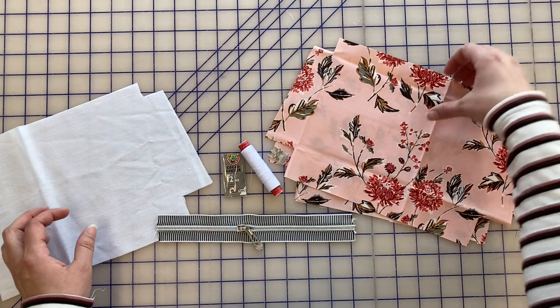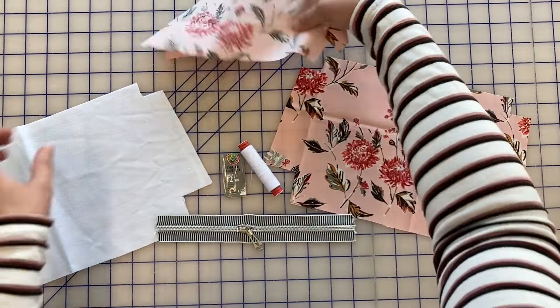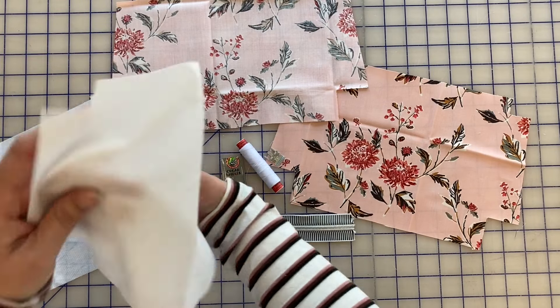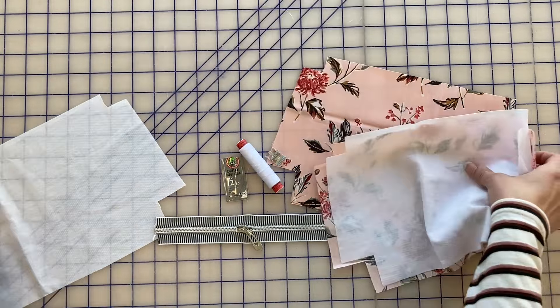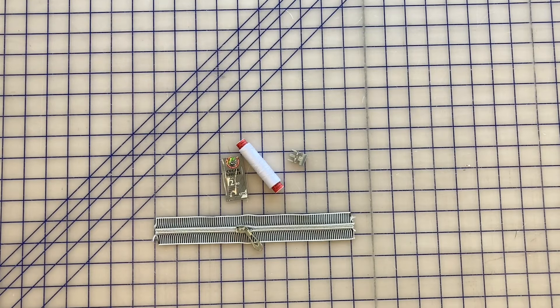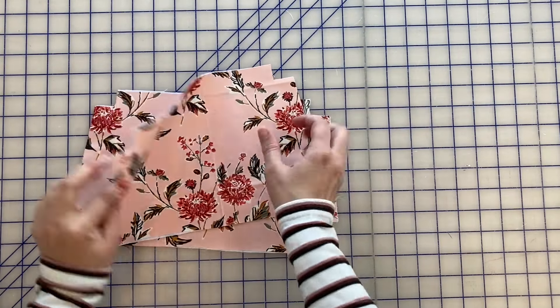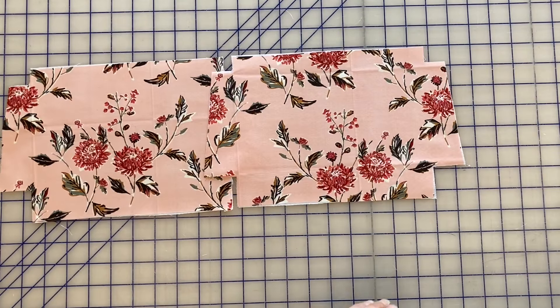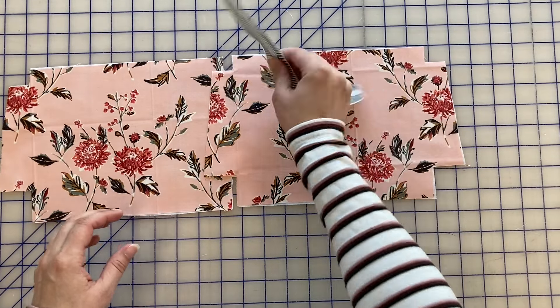So the first thing we're going to do is set aside the lining and we are going to fuse the interfacing to our exterior fabric. Once we have our pieces fused, we are going to attach the zipper.